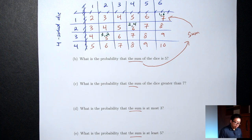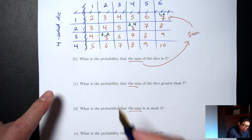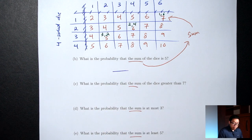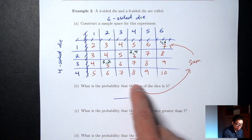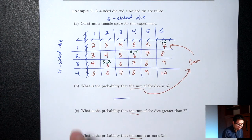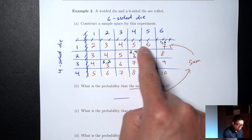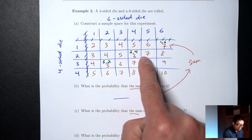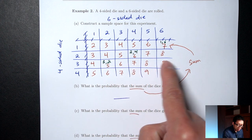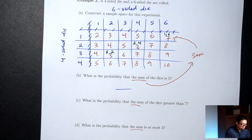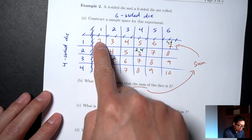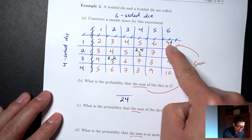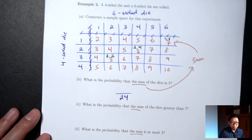Part B: What's the probability the sum is 5? The bottom is the number of outcomes in the sample space — the boxes on the inside of the table. There are 6 columns and 4 rows, so 6 × 4 = 24 total outcomes.